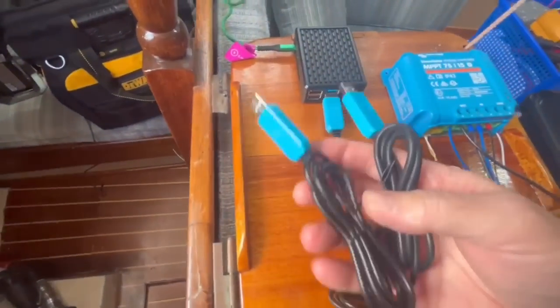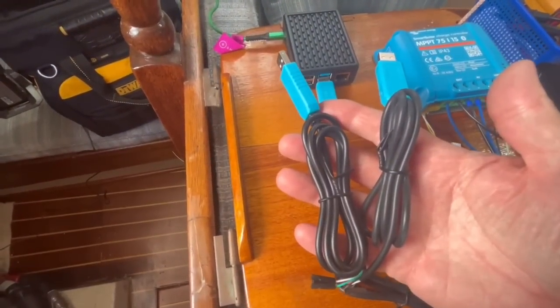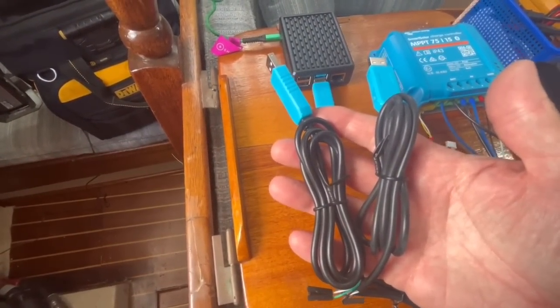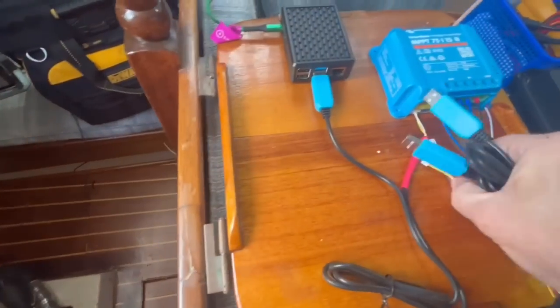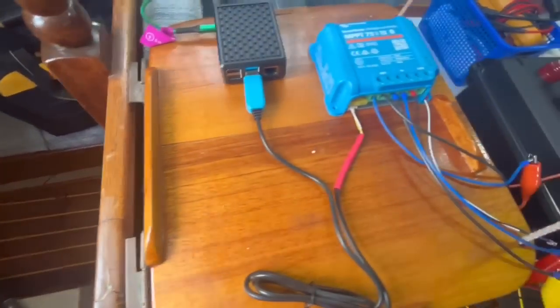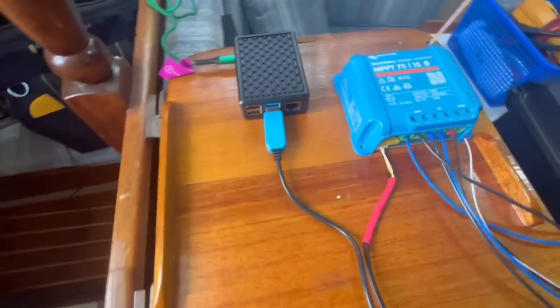So you can buy these things. They're like I think I got three of them for fifteen bucks off Amazon. I'll put the link in the description. Same thing with the JST connectors. They're really cheap. You just have to reorganize it.